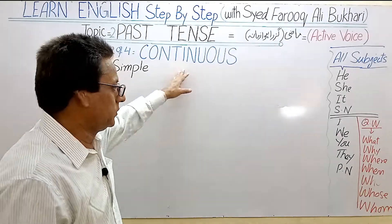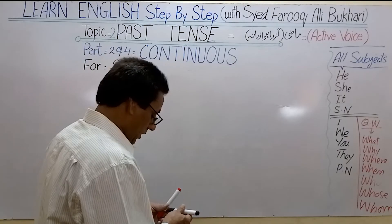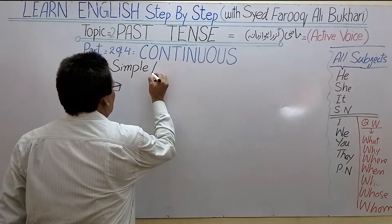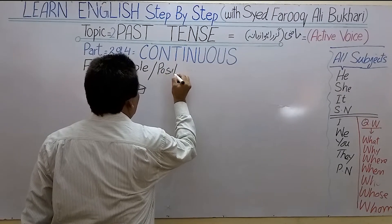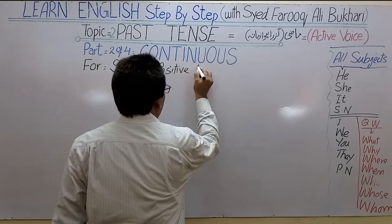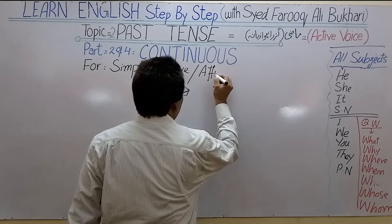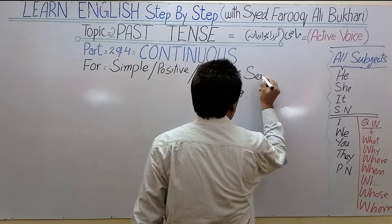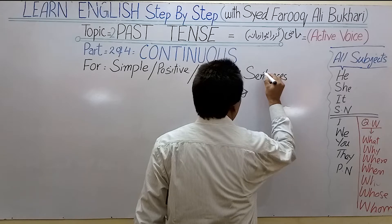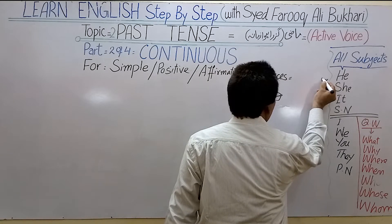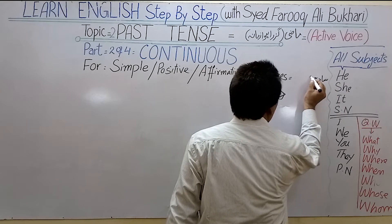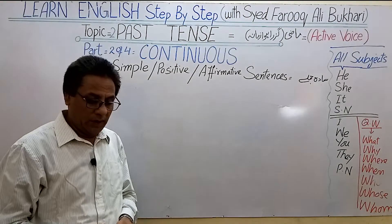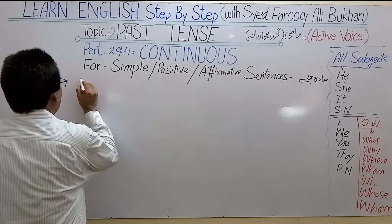Past tense ke liye hum continuous jumle banane ka tarika seekh rahe hain. Jisme jo simple sentences hain — simple sentences ko hum positive bhi kehte hain, P-O-S-I-T-I-V-E, positive ya affirmative sentences — yaani ke jise hum saada ya musbat jumle kehte hain.